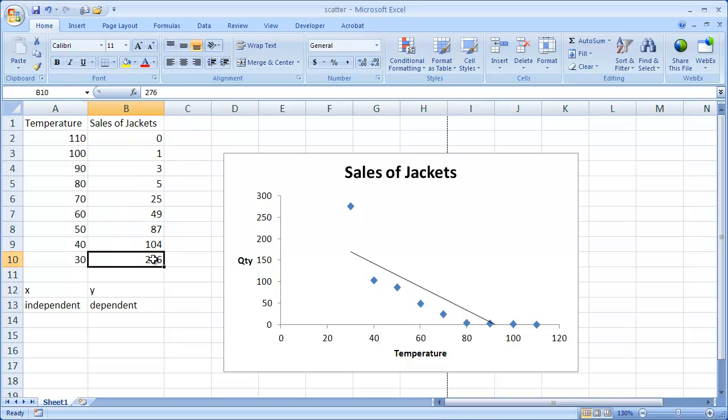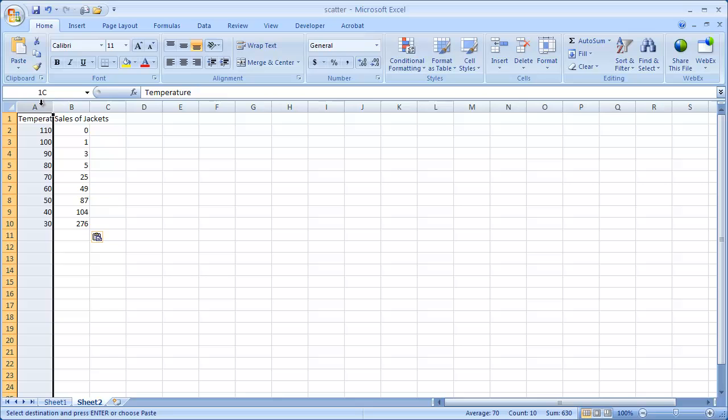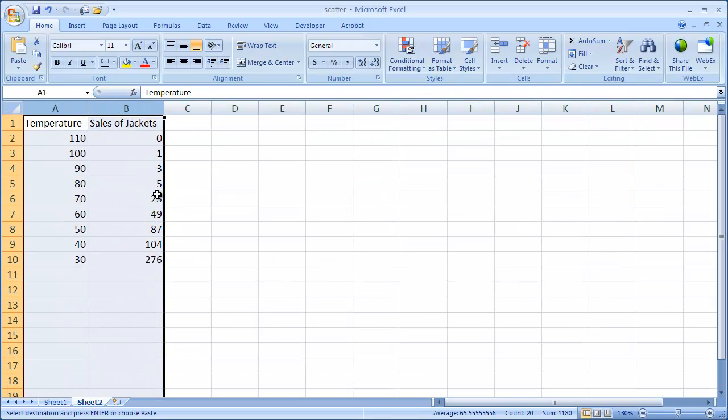I'm going to go ahead and bring this table over. Select that, Ctrl-C, bring it into a new worksheet, and paste the value there. Let's double-click these columns, the lines here in between the columns just to auto-fit. Let's make this a little bit bigger.